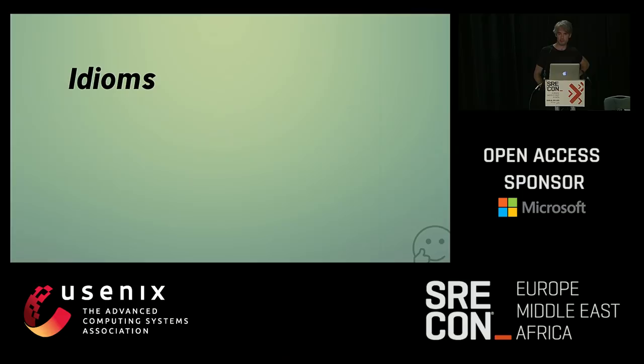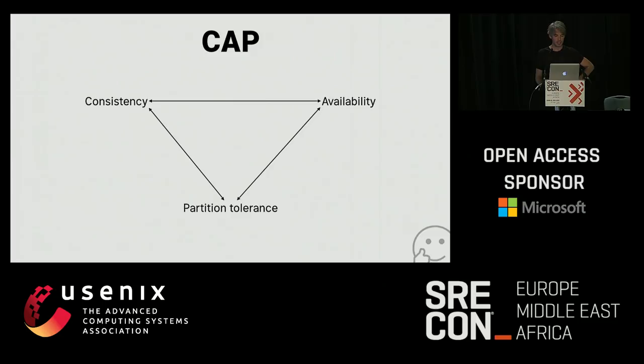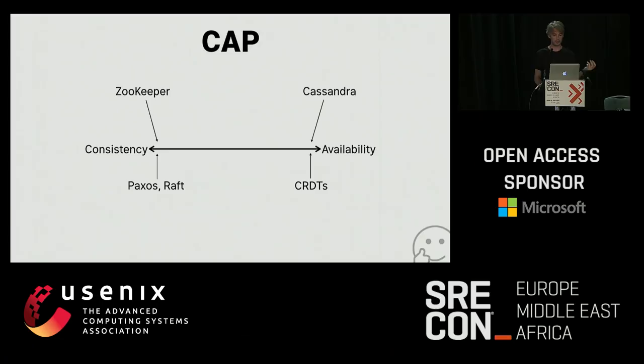So we have some idioms to deal with this sad state of affairs. Back in the 80s, the peak was RPC stuff. In the 90s, we had middlewares like CORBA and ICE. In the 2000s, we had CAP. There's this idea of a spectrum: you have to decide whether you want consistency, availability, or partition tolerance — pick two. Since partition tolerance is non-optional, it's really a choice between consistency and availability, and there are protocols and technologies that exist at various points along these spectrums.